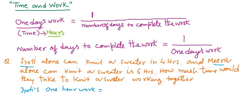That is, work is to knit a sweater, means work is one, and total time taken by Jyoti is four hours. One by four: one by four work she may do in one hour.